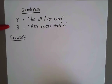The first one, that looks like an upside-down A, means 'for all' or 'for every.' And the second one, that looks like a backwards E, means 'there exists' or 'there is.'